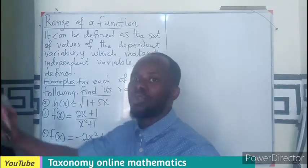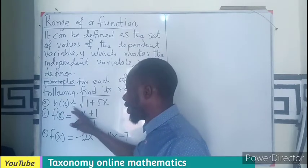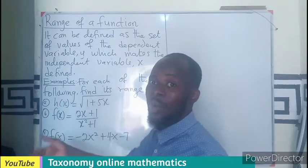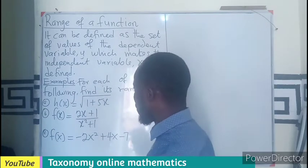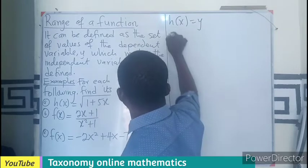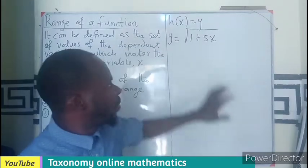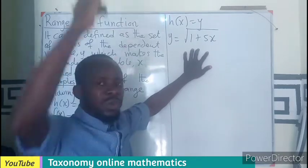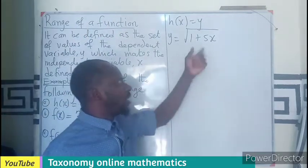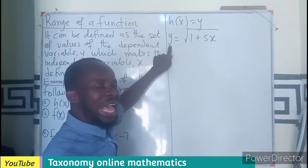So if you look at the first example, we have the function h(x) equals the square root of one plus five x. This function has h(x) which can be taken as y, the dependent variable. So if I say h(x) equals y, then y equals the square root of one plus five x. The range is the values of y; the domain is the values of x. We are looking for the values of y that, when placed into this equation, make x defined.